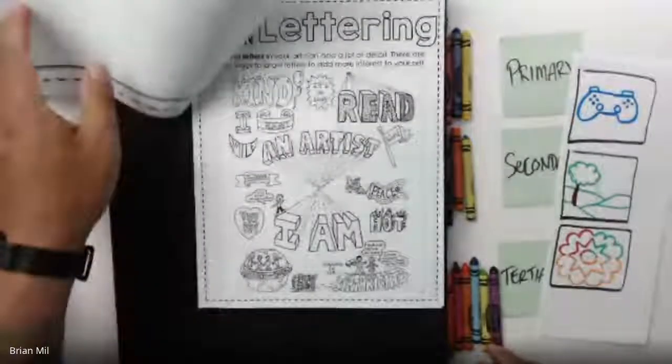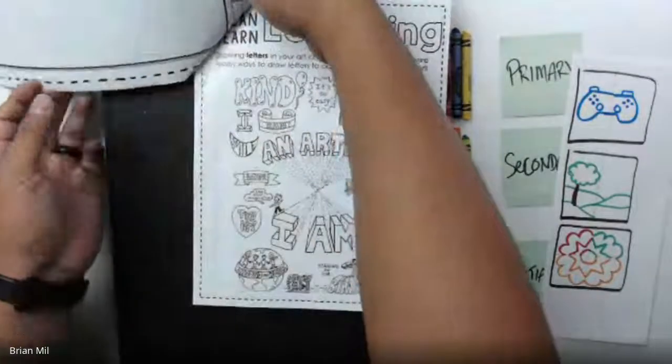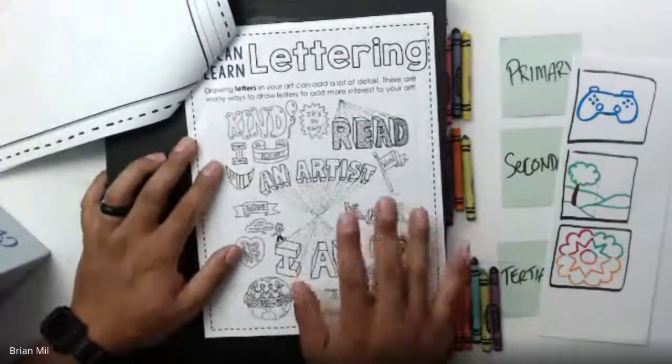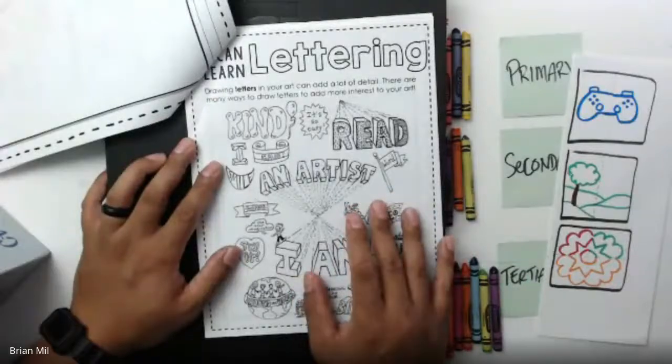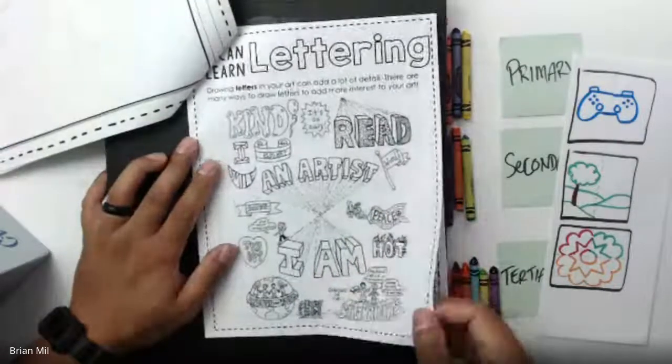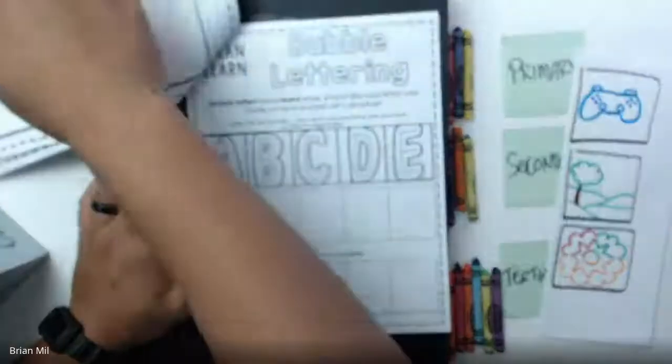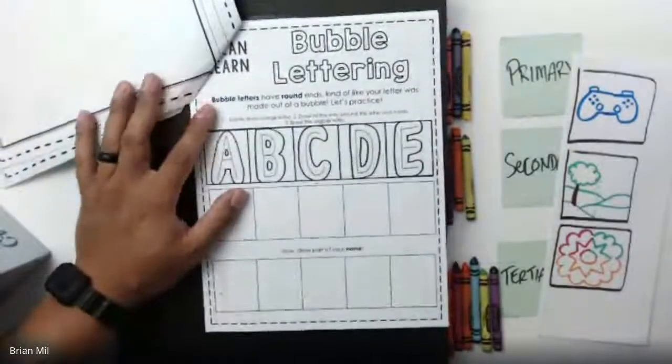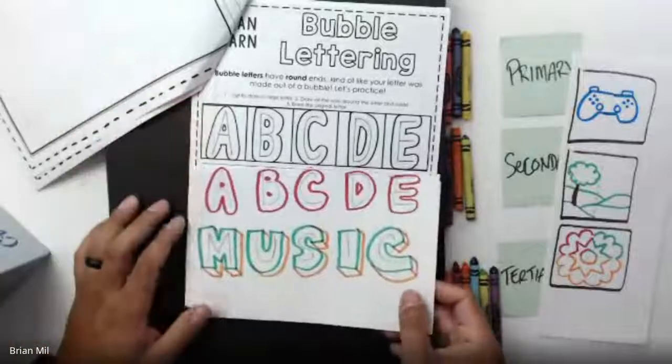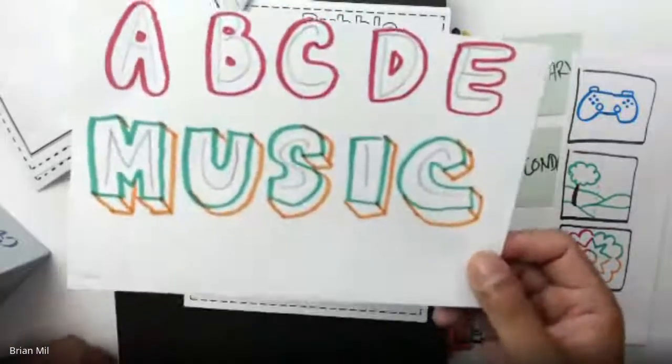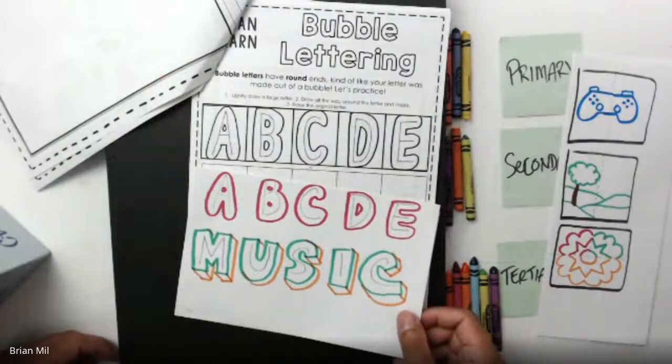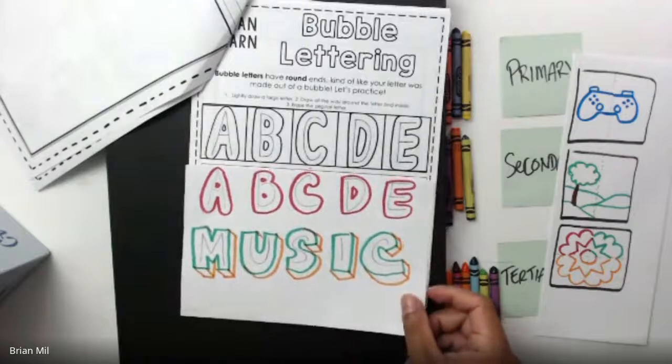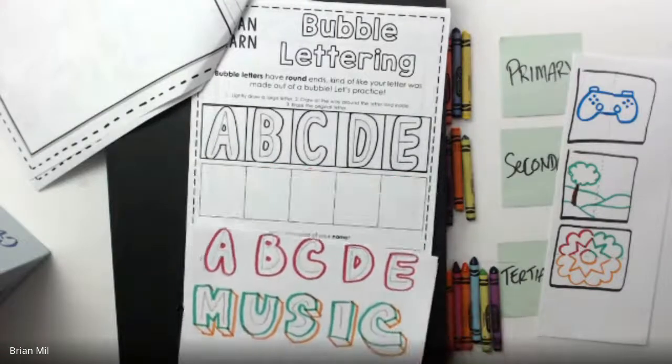We do have about six minutes left. Let's take a look at the next page. We're going to talk about lettering next week and it's going to be really fun. Let's jump to the next page real quick - it's called bubble lettering. I did do an example right here on this blank sheet of paper, so if you don't have a packet, blank sheets of paper work just fine.